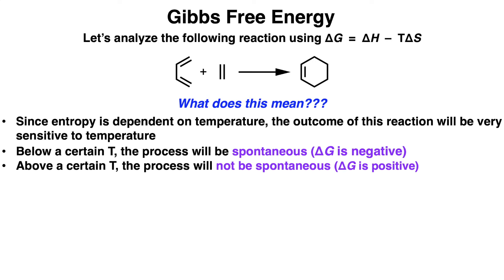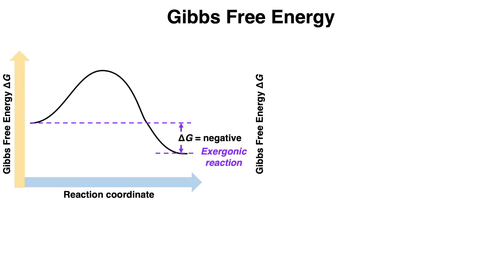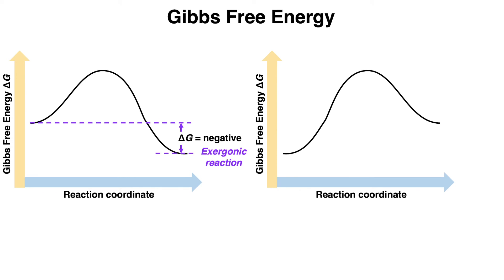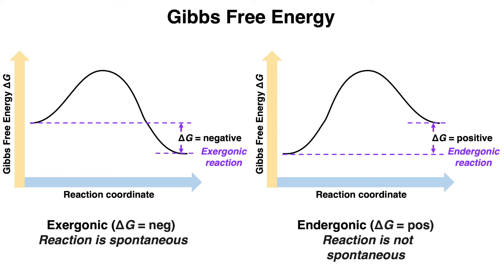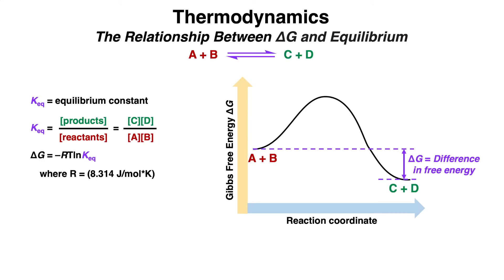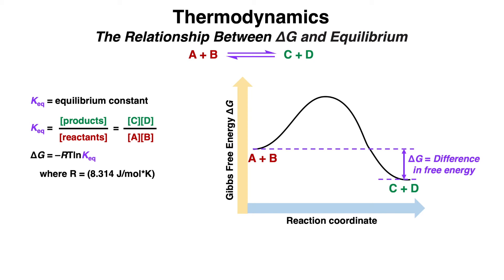If delta H is negative while delta S is also negative, the outcome of this reaction will be very sensitive to temperature. Below a certain temperature, the reaction will be spontaneous, meaning delta G will be negative. But above a certain temperature, the reaction will not be spontaneous, where delta G will be positive. Gibbs free energy values can also be plotted on an energy diagram: if delta G is overall negative, the reaction is exergonic and spontaneous; if delta G is overall positive, the reaction is endergonic and not spontaneous.